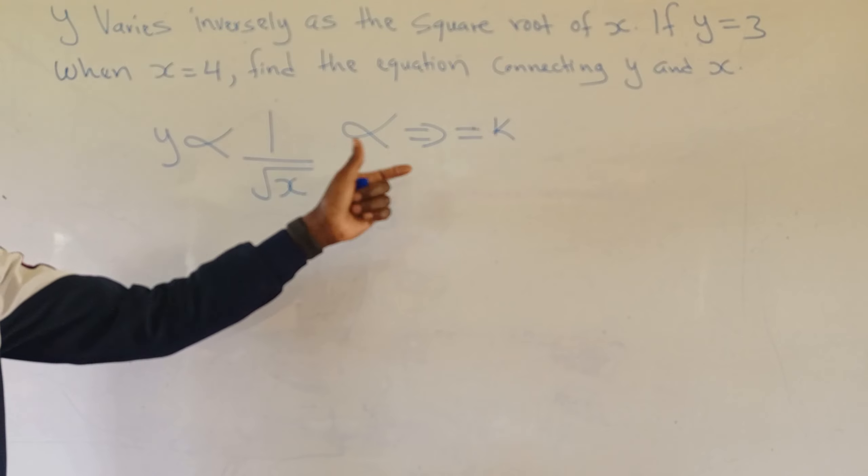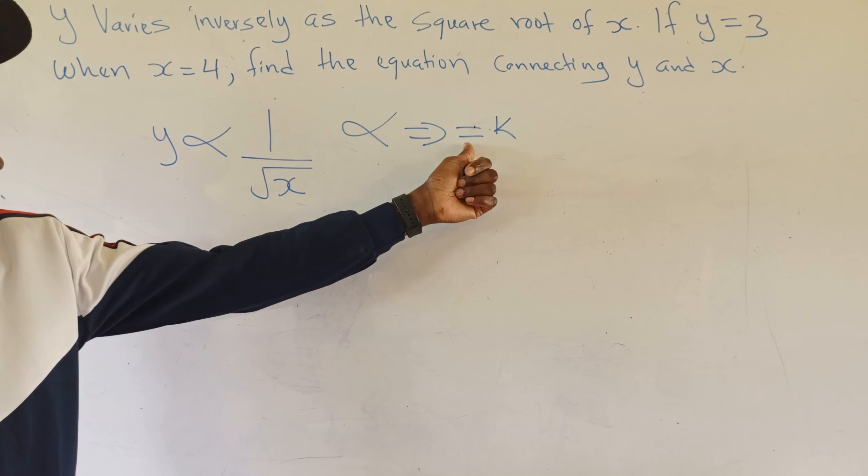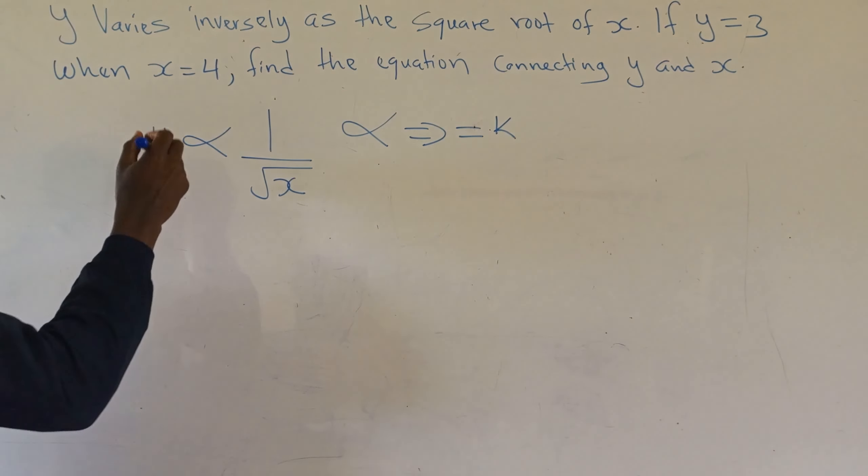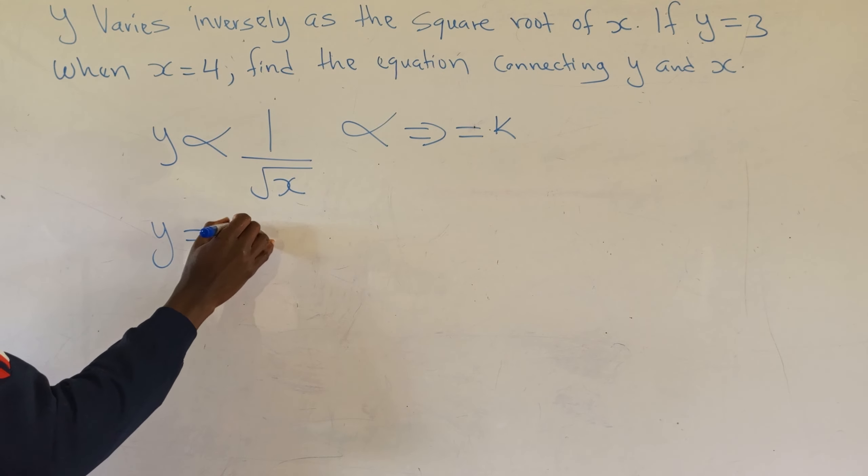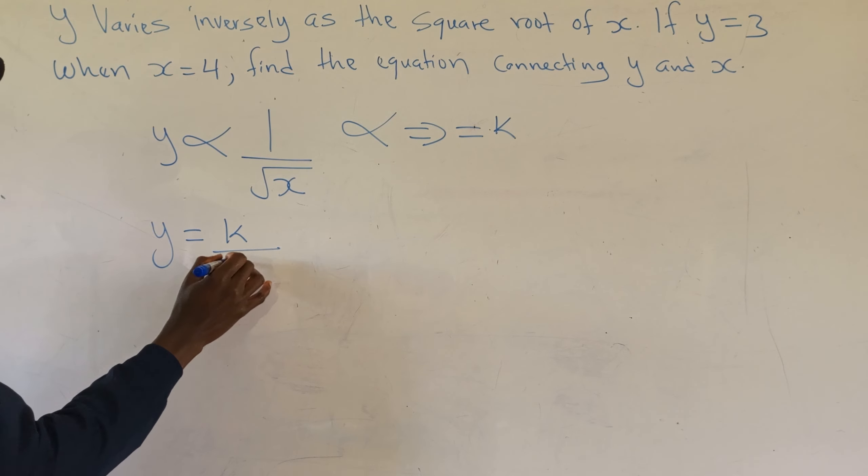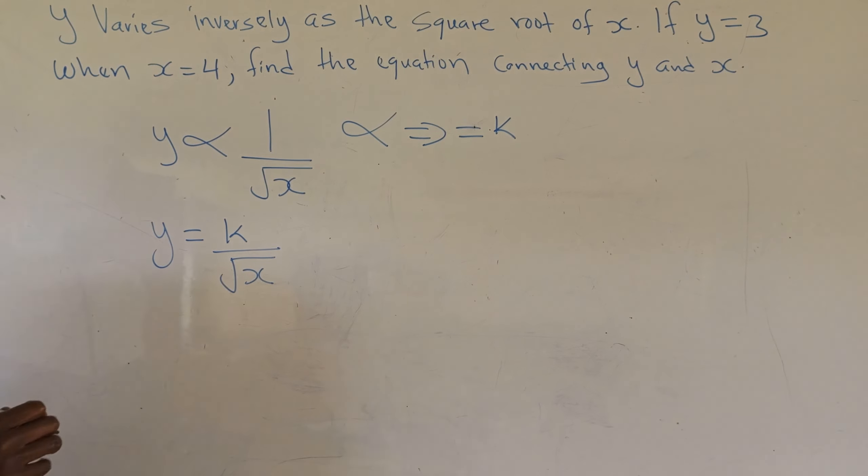Anytime you want to remove the variation sign, you replace it with an equal sign and a constant. So I'm going to have y equals k over the square root of x.